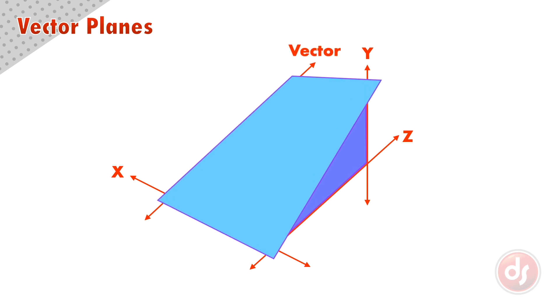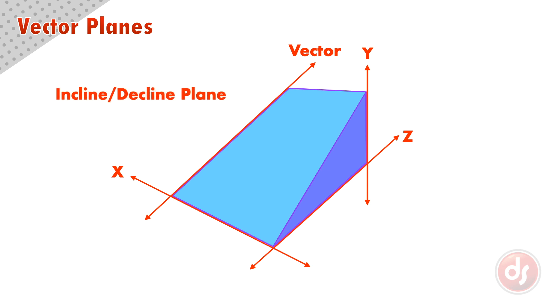So a plane that moves at an angle to x, y, and z would be a vector plane. These planes are often referred to as an incline or decline plane in perspective because they travel up and down from the horizon line, but we'll refer to them as vector planes.